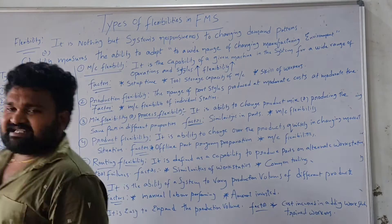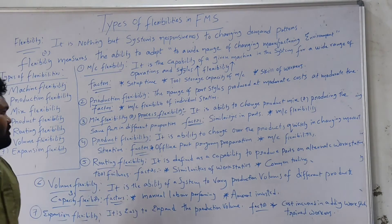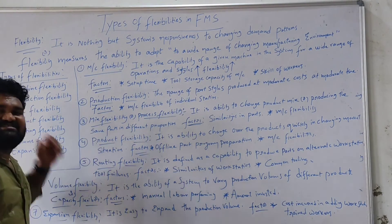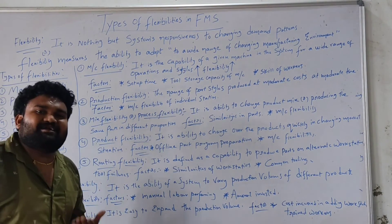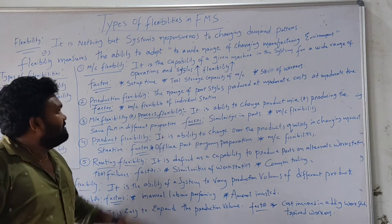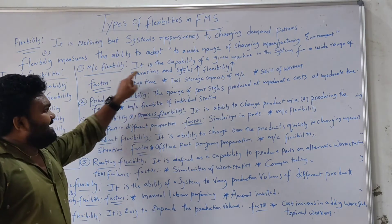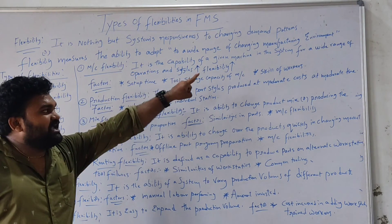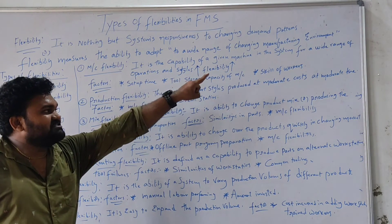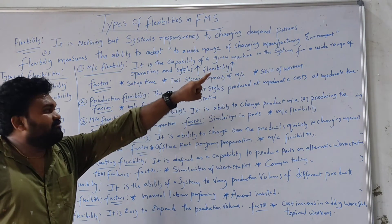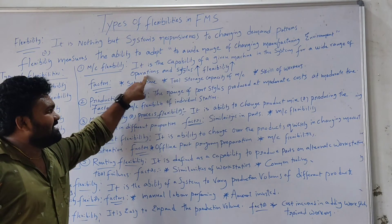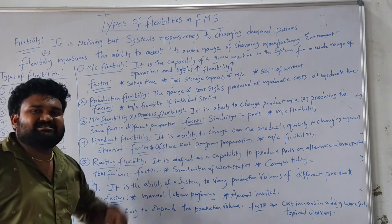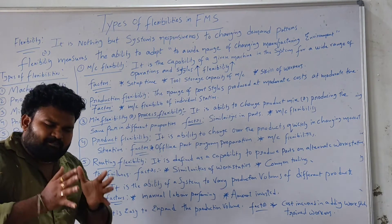The first type of flexibility is called machine flexibility. It is the capability of a given machine in the system to perform a wide range of operations and styles.